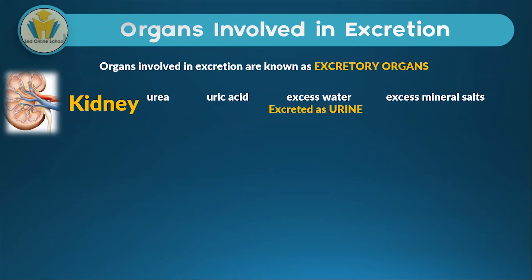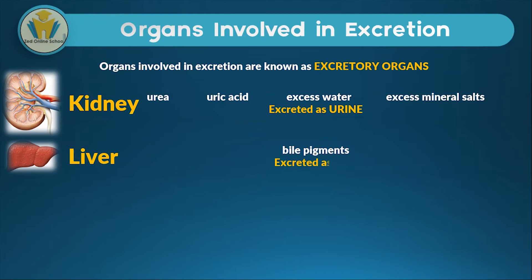The next organ involved in excretion is the liver. The liver excretes the product bile pigment through bile. Bile is usually excreted via the alimentary canal, also known as the digestive system.